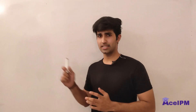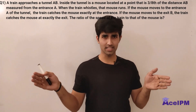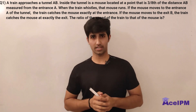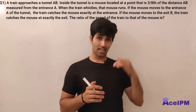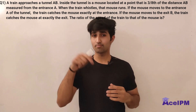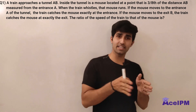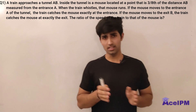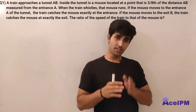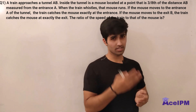There is a tunnel AB. The length of the tunnel is AB and a train approaches towards the tunnel. It blows a whistle, and there is a mouse inside the tunnel at 3/8 of the distance from the entrance of the tunnel. After listening to that whistle, the mouse starts running.